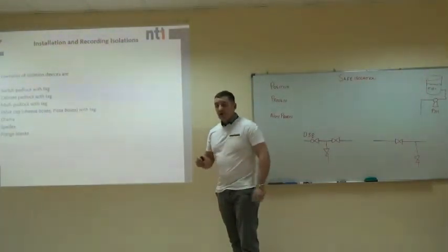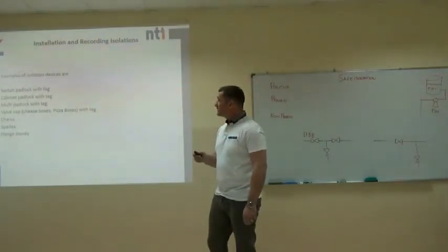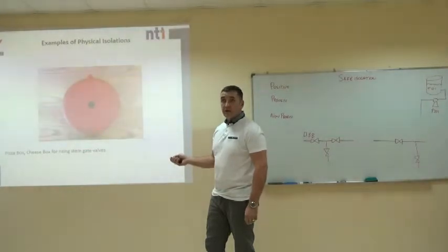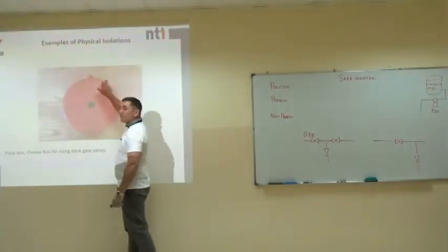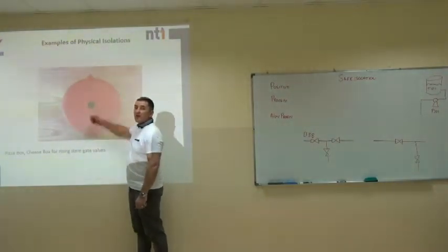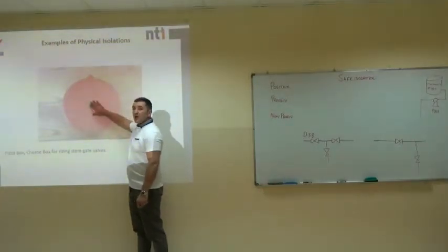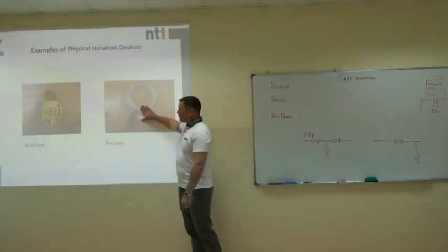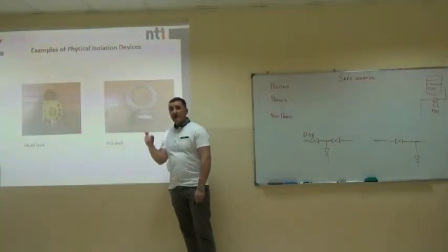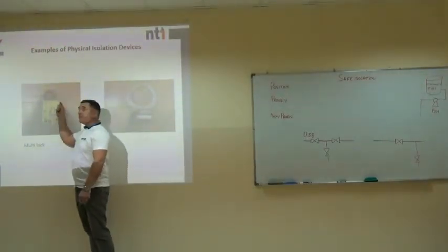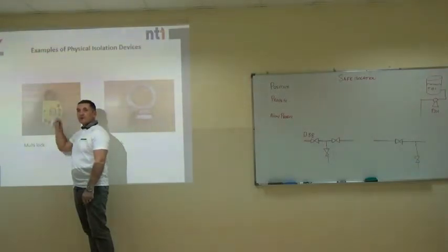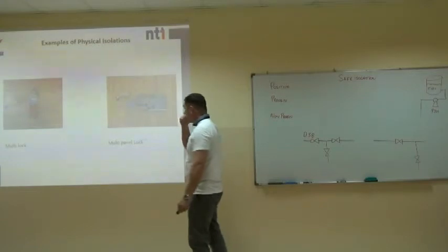We should never use emergency stop buttons or switches as isolation devices. All electrical isolations should be isolated properly. Examples of isolation devices — in the UK we call this a pizza box, cheese box, or baby bell. This is designed to go around the wheel of a gate valve, with a hole in the middle for the rising stem, enabling the valve to be locked in an open or closed position. Multi-locks and wire locks are quite good for valves. During a shutdown, every tradesperson puts their own lock on, and the Permit to Work Authoriser puts theirs on as well. Once all tradespeople have been removed from the permit, the Permit to Work Authoriser withdraws their lock last.